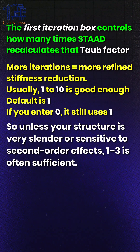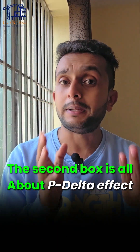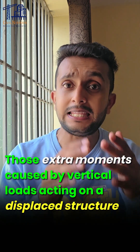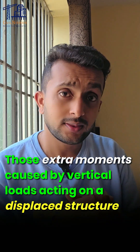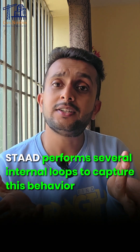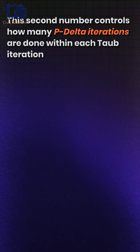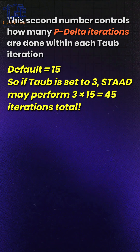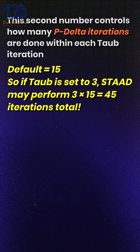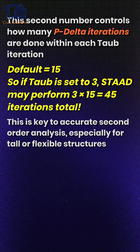Unless your structure is very slender or sensitive to second-order effects, one to three iterations is often sufficient. The second box is all about P-delta effects — those extra moments caused by vertical loads acting on a displaced structure. STAAD performs several internal loops to capture this behavior. This second number controls how many P-delta iterations are done within each tau-b iteration. The default is 15, so if tau-b is set to 3, STAAD may perform 3 × 15 = 45 total iterations. This is key to accurate second-order analysis, especially for tall or flexible structures.